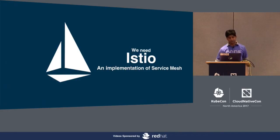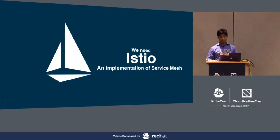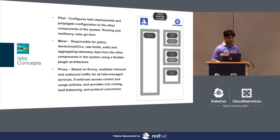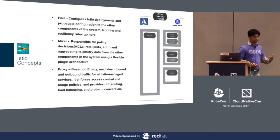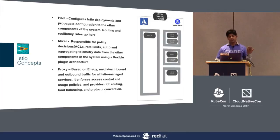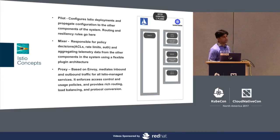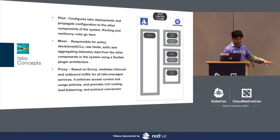Istio is essentially an implementation of the service mesh, launched earlier in the year with IBM, Google, and Lyft coming together. Looking at the architecture of Istio, there are three key components. Pilot is responsible for configuring Istio deployments and ensuring that all configurations are propagated to all the components in the system. All the routing and resiliency rules we create go into Istio Pilot.